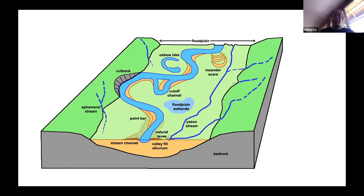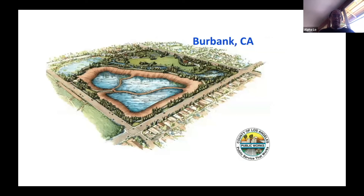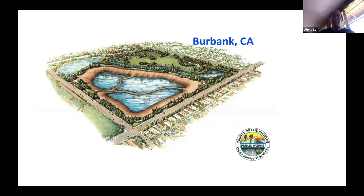Beavers also help by building weirs that divert water from rivers into floodplains. One way to address water diversion to LA is to make LA itself a small water cycle. In Burbank, a lot of concrete has been depaved and wetlands built, allowing rainwater to seep into the land, be cleaned, and flow into aquifers. The plan is to build wells to bring that water up for inhabitants. Creating sponge cities is key to restoring the rain.